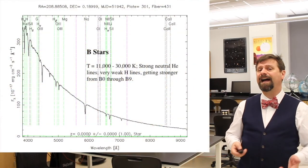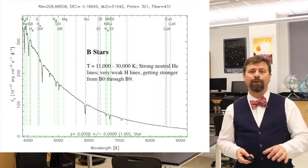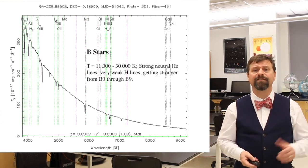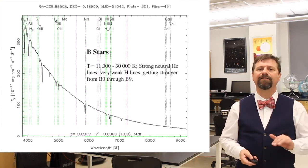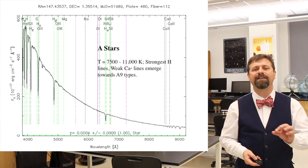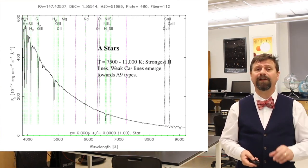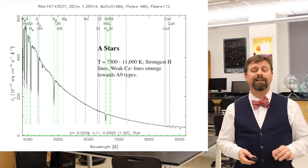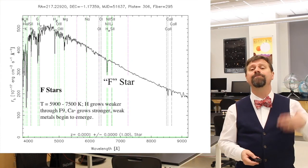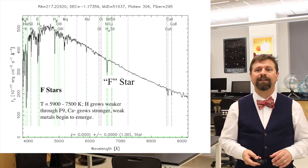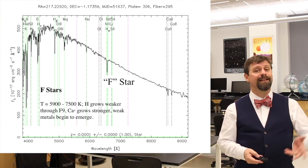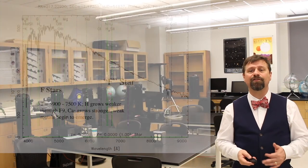Hydrogen lines get stronger and stronger until we reach A stars, which have cooled to about 10,000 Kelvin, showing very deep absorption features due specifically to hydrogen. In F stars, hydrogen absorption starts to get weaker because the temperature is cooler — around 6,000 to 7,000 Kelvin — and ionized calcium lines start to emerge. In G-type stars like the Sun, the peak of the curve is firmly in the visible range at approximately 5,500 angstroms.